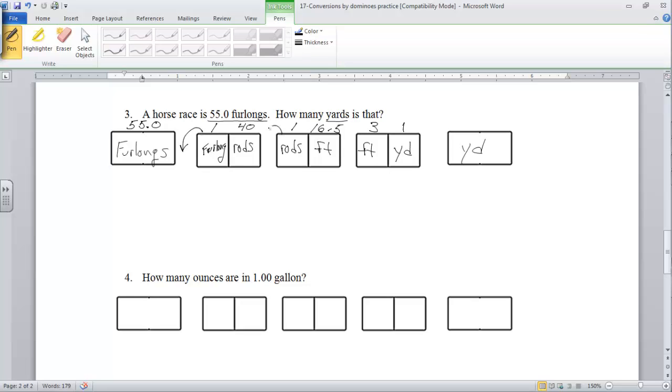Remember what you're going to do is you're going to flip everything counterclockwise. Well, I won't say everything - the first one and the last one have to stay, you flip everything else in the middle. So we have 55.0 furlongs and our first conversion then will be 40 rods flipping counterclockwise over one furlong.